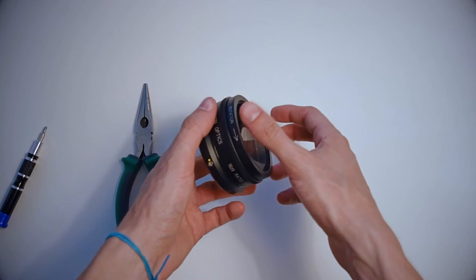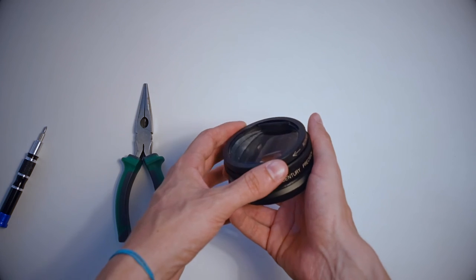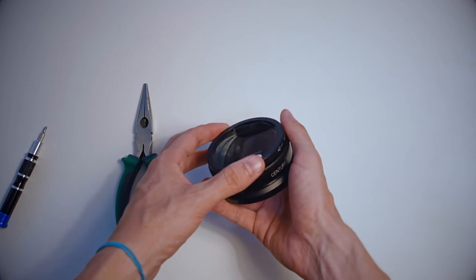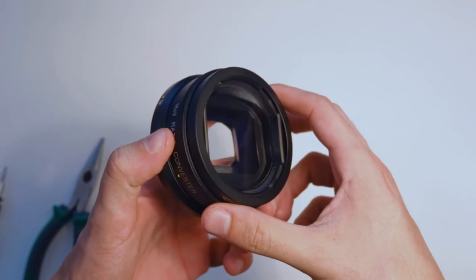As explained in the Century review, you can use an 82-72 or 77-72 step-down ring with electrical tape around here to create front threads.